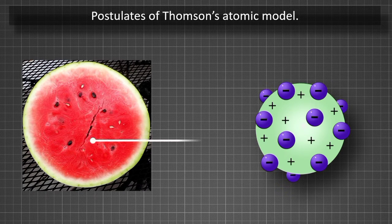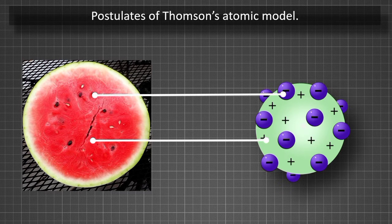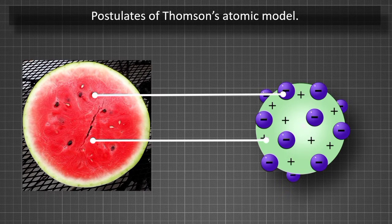The model has also been compared to a watermelon, because the red edible part of a watermelon was compared to the sphere having a positive charge, and the black seeds filling the watermelon looked similar to the electrons inside the sphere.